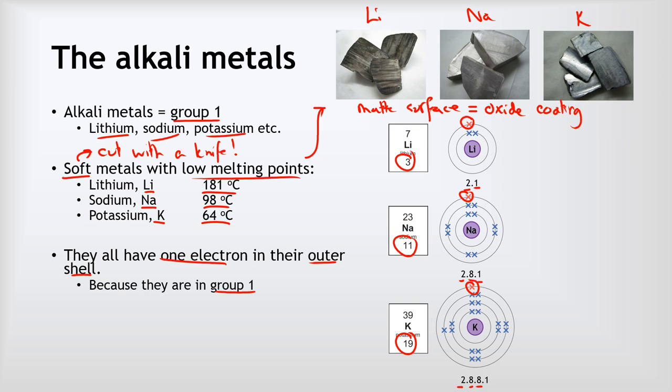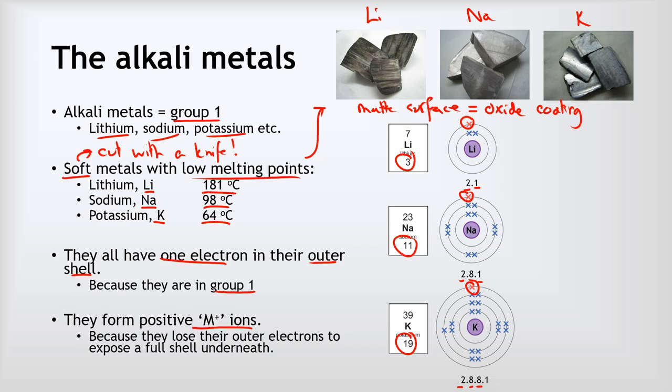Now when metals react they always react in such a way as to lose electrons and become positive ions. So in the case of the alkali metals, they will lose one electron to form M+ ions, not M2+ or M3+, just metal plus ions. And the reason why is because they lose their outer electrons to expose that full shell underneath.